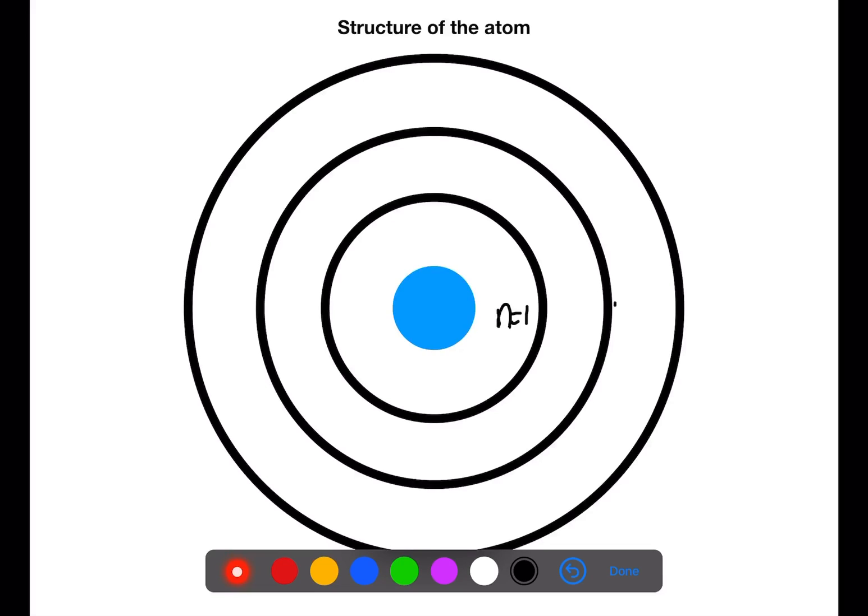These are the principal energy levels: n equals 1, n equals 2, and n equals 3. Electrons can move between these levels only if a specific amount of energy is applied.